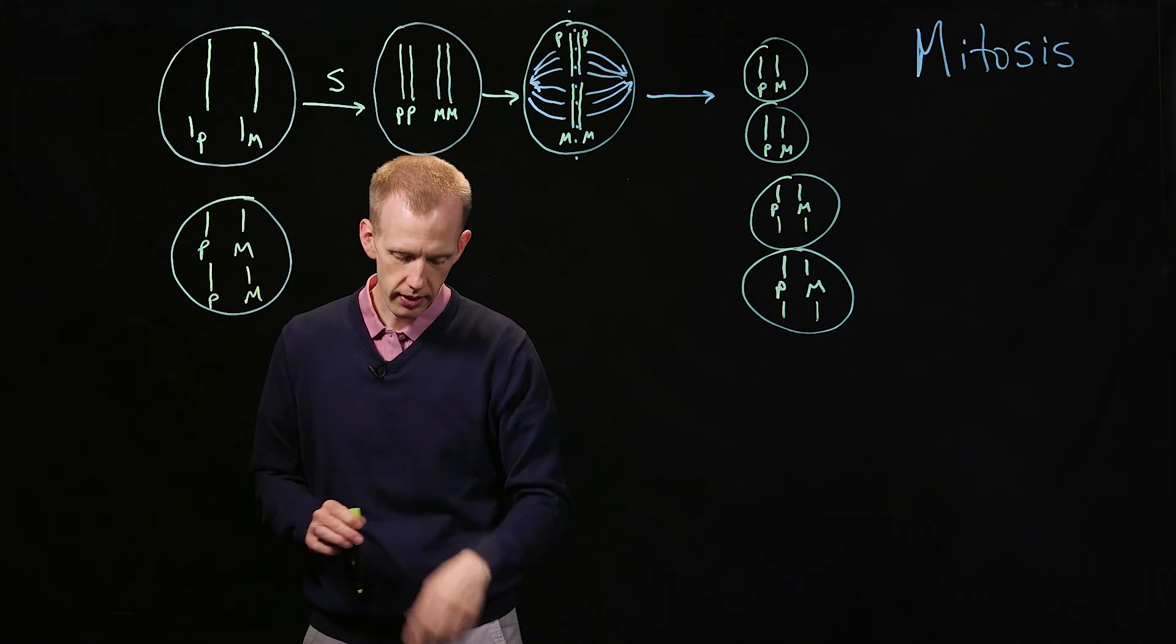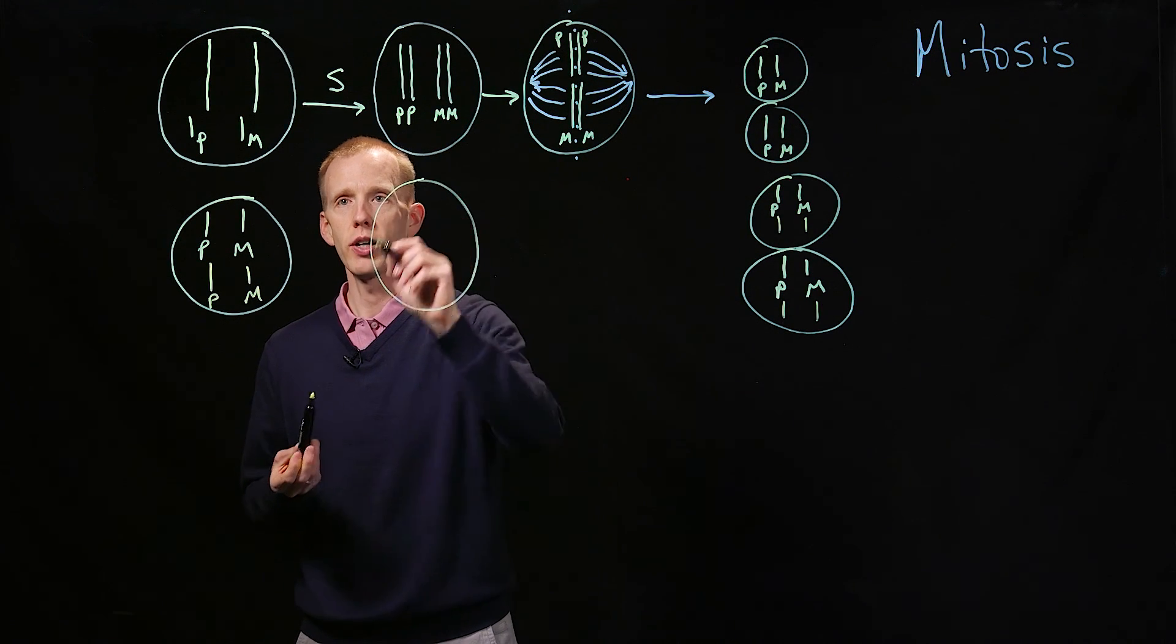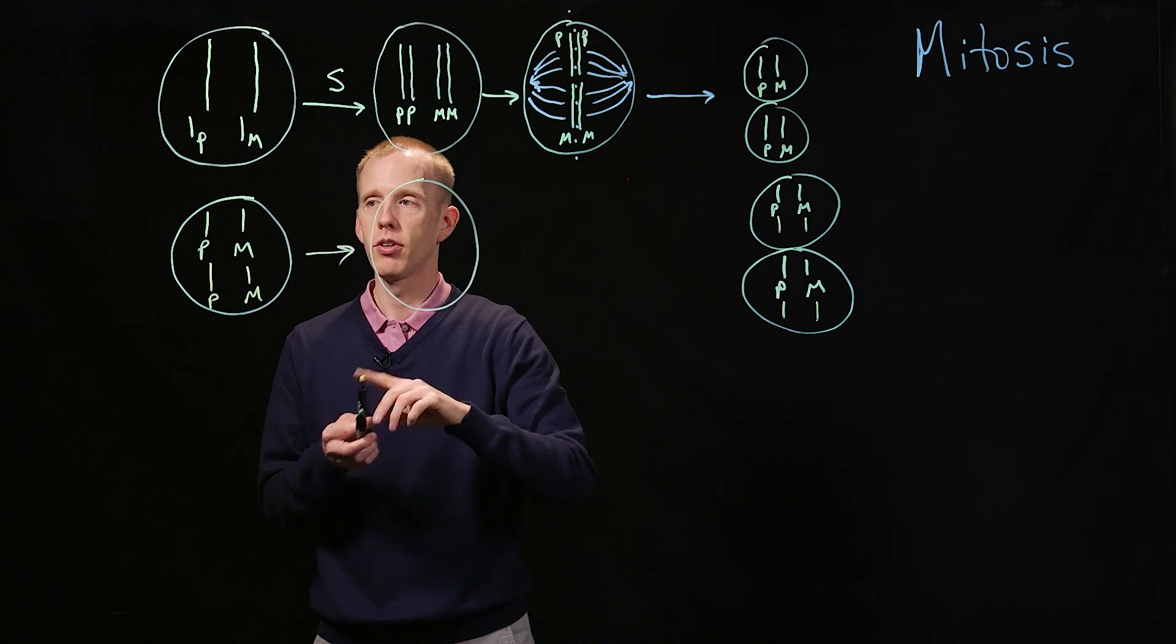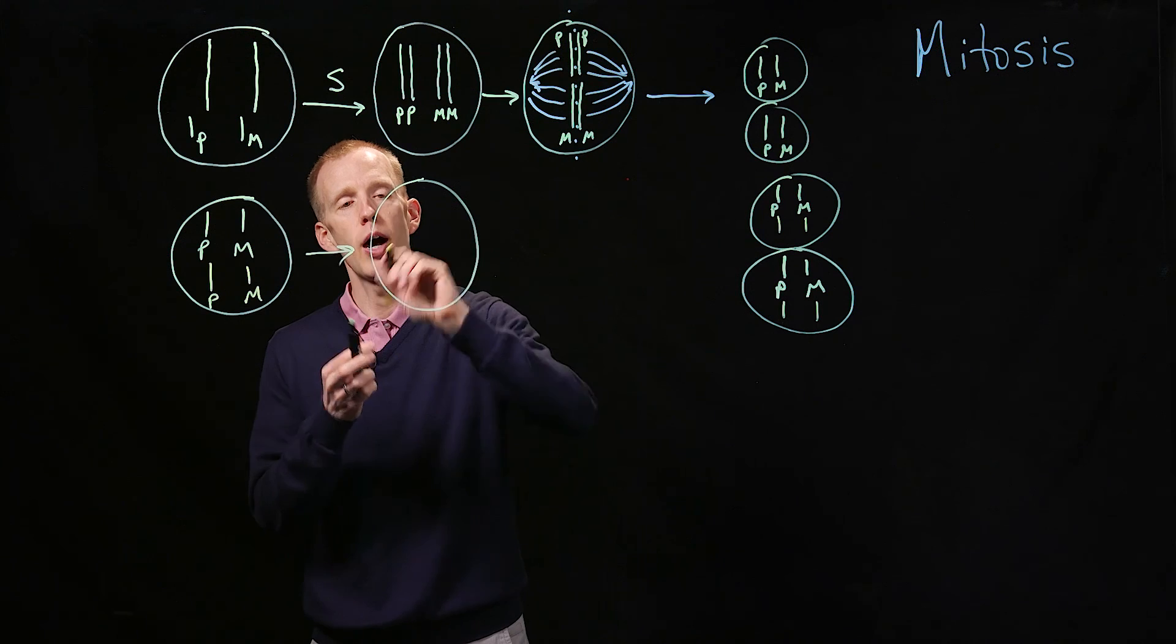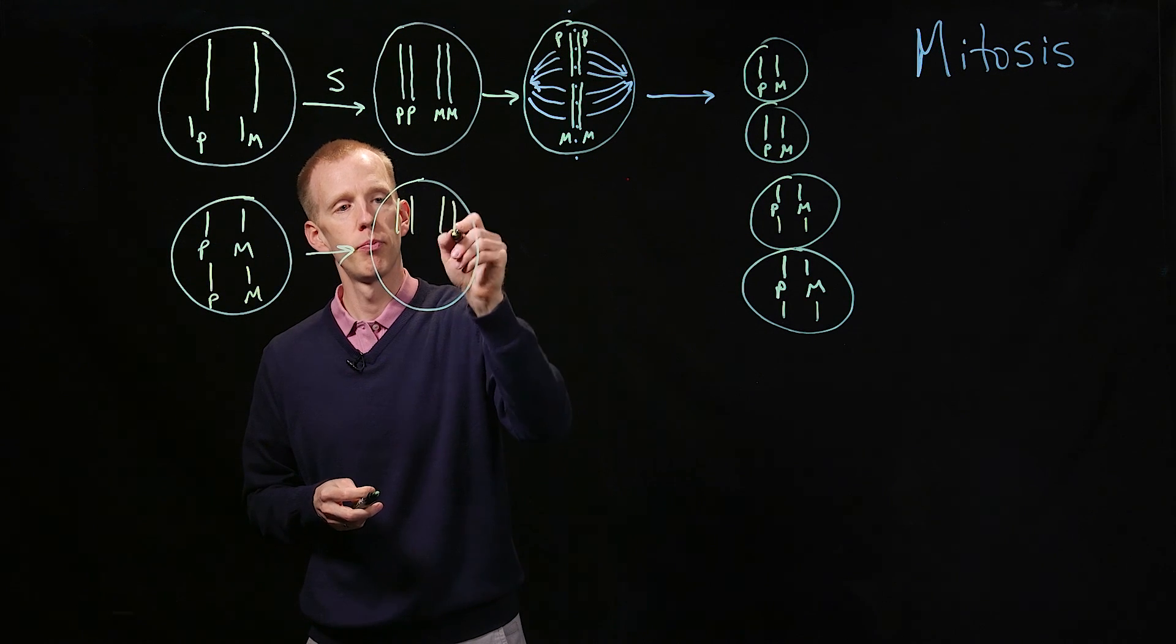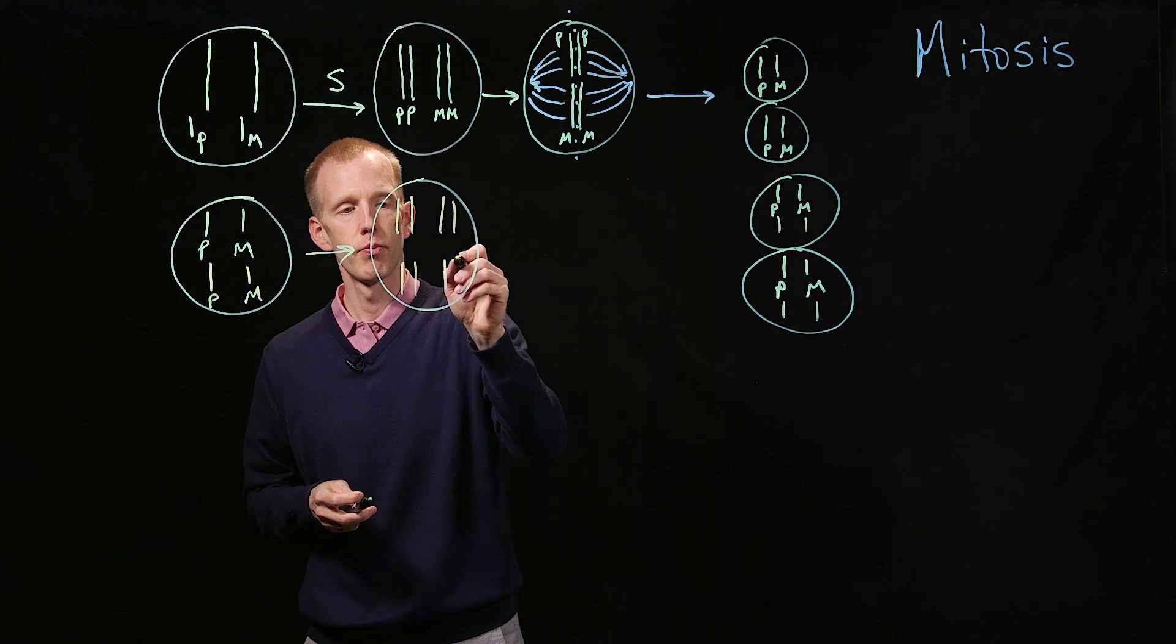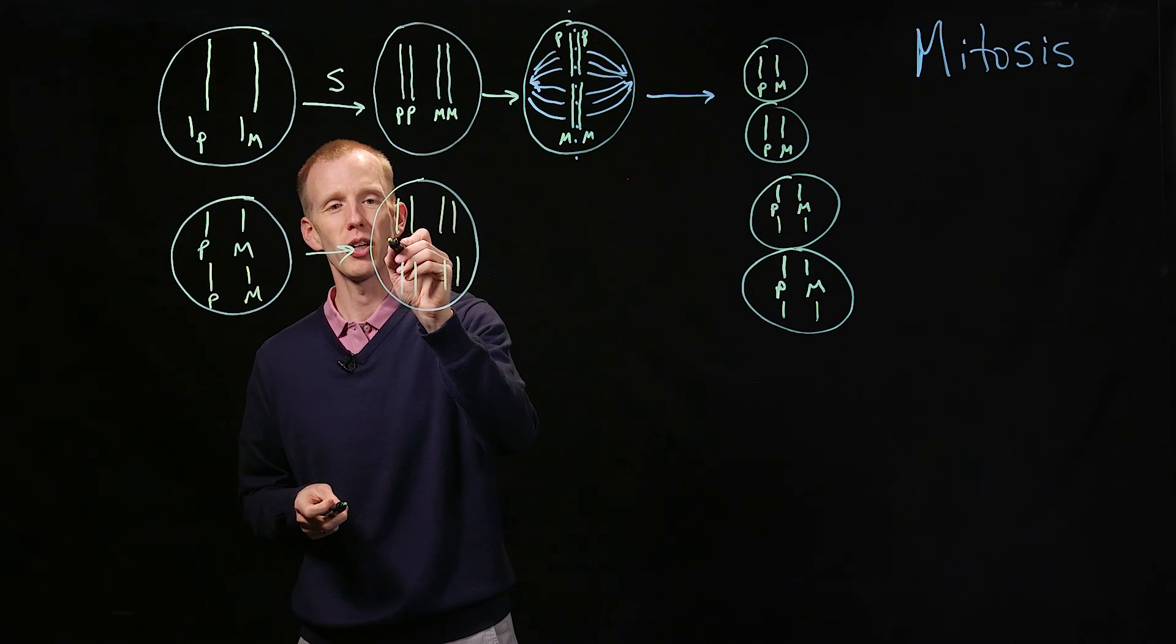After DNA synthesis, things look about as you'd expect. We have two copies of the paternal chromosome and two copies of the maternal chromosome of each of those two molecules.